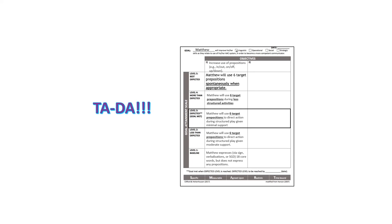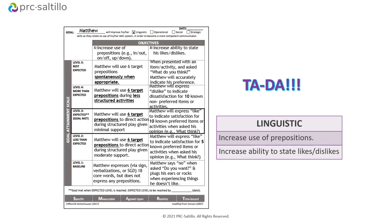There we have Matthew's complete prepositions goal with benchmarks for a functional skill relating to his linguistic abilities. If you're feeling overwhelmed, the areas you really need are: your objective, your baseline, and Level 3. Once you have those three things, you can fill in all other levels by adjusting the level of support, number of opportunities or trials, number of communication partners, number of environments, percentage or frequency, duration, latency, or speed.